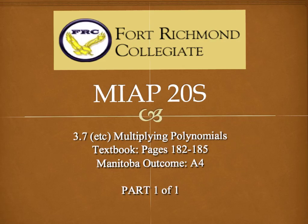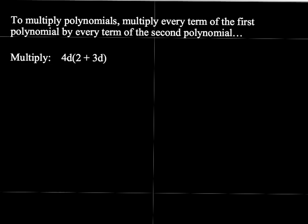Okay, welcome to the multiplying polynomials outcome for FRC. So this is the only video on this one, so let's just jump right in. Here we go. Okay, so there's only one rule actually, as it turns out, and the rule goes as follows. To multiply polynomials, multiply every term of the first polynomial by every term of the second polynomial.